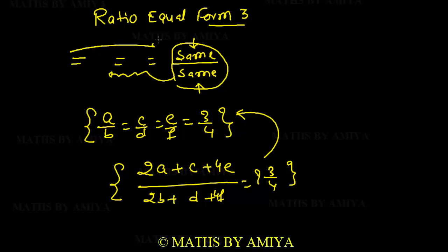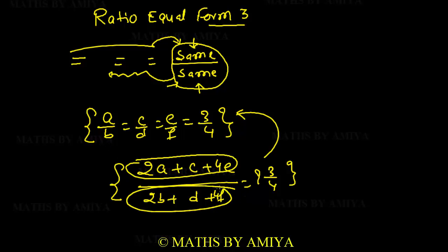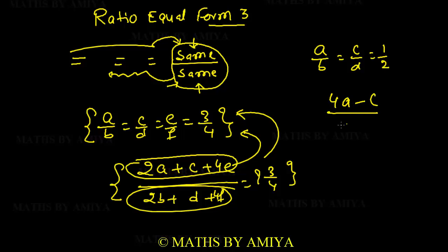Form 2 says: if all are equal, same change in numerator affects the same change in denominator. The reverse is also true. For example, if a/b = c/d = 1/2, then (4a-c)/(4b-d) = 1/2, because 4a, 4b and -c, -d is the same change.